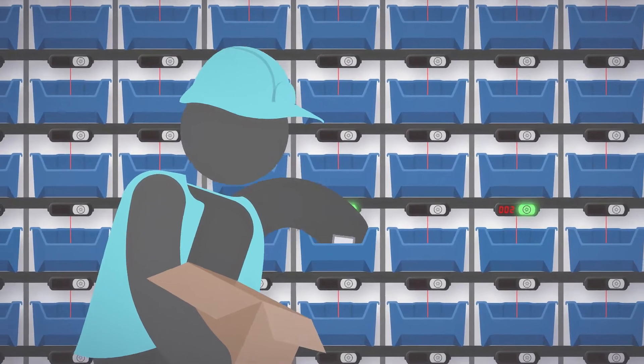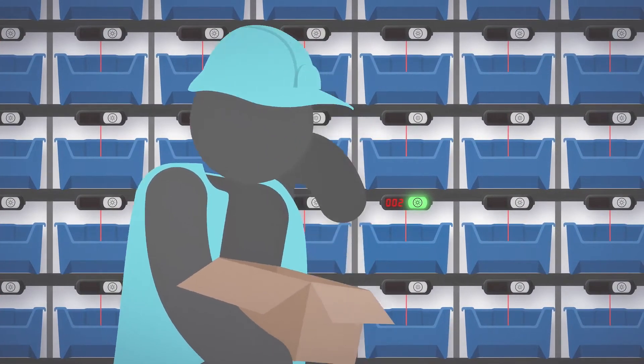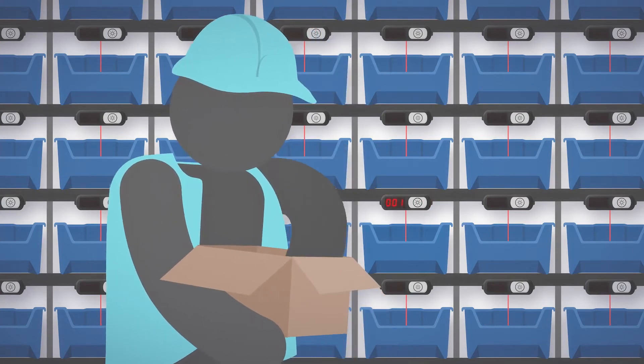Some pick-to-light devices feature programmable secondary buttons. When a worker notices a bin is getting low, they can immediately request a parts refill before the bin runs out.